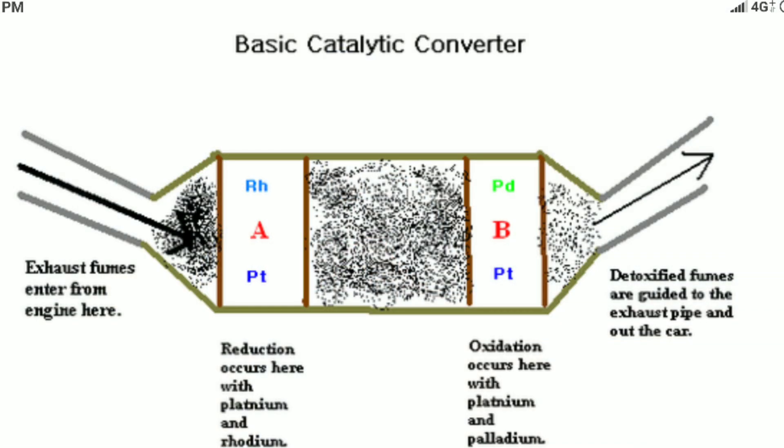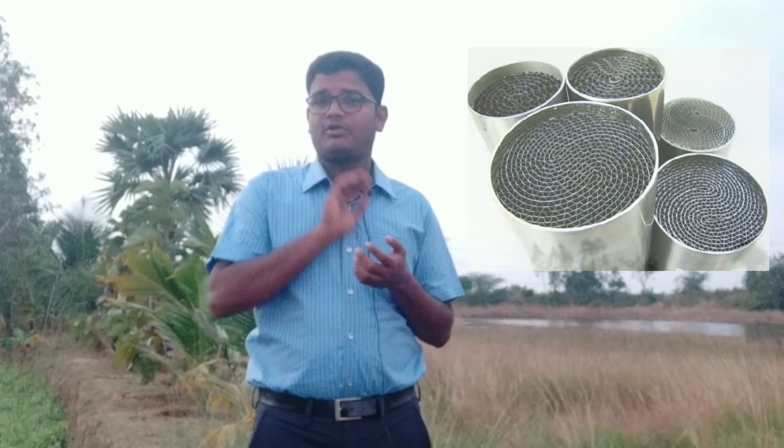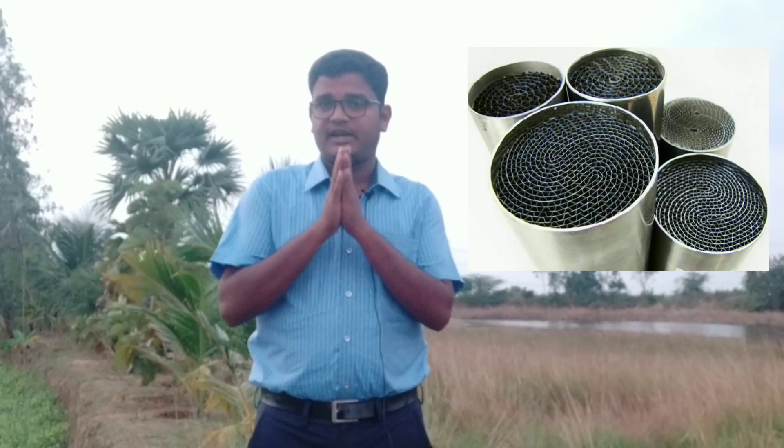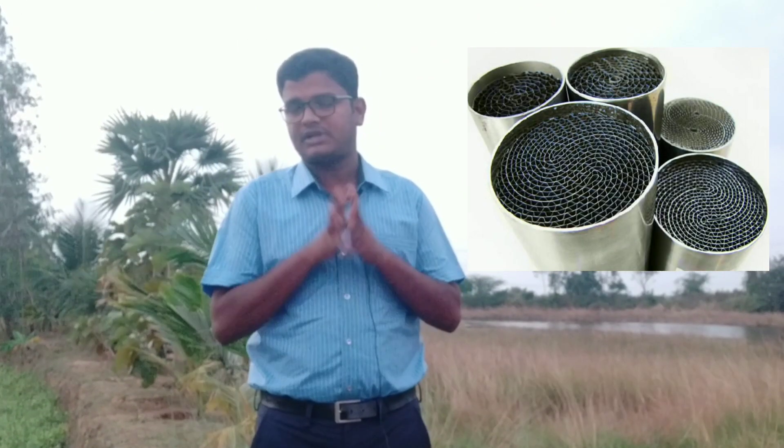The catalytic converter uses rhodium and palladium. There is also a small percent of platinum mixed in. The platinum is present in the catalytic converter as a gel, and it works well with heat and gas.